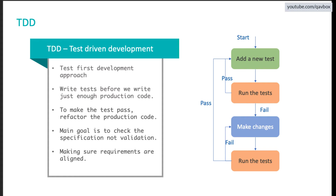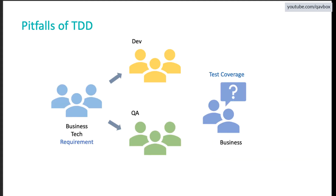One problem with TDD is that it is more costly — you are spending more money and resources. The reason is that the application is not yet ready and you are completely relying on your test cases. What if your test cases don't cover enough to implement the functionalities? You may also miss certain non-functional requirements, since test cases might only focus on functional requirements. That's where the problem comes in — those are the demerits or pitfalls of TDD.